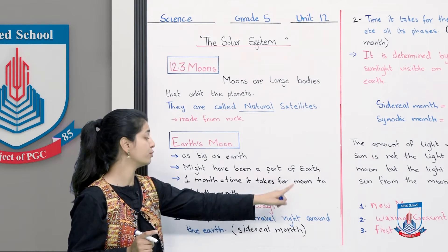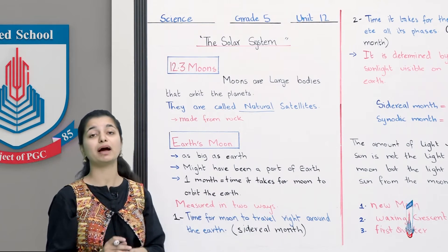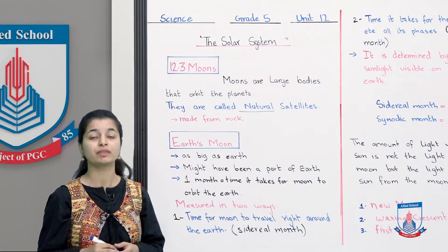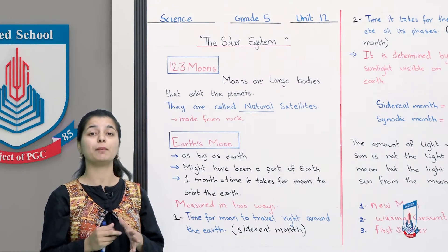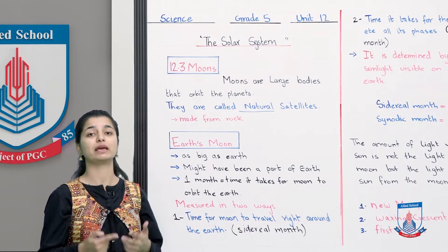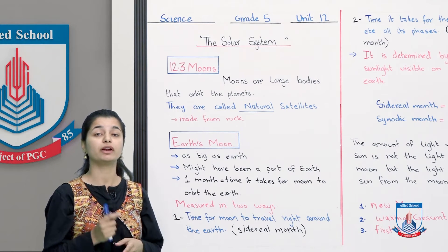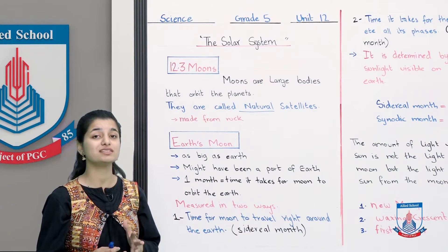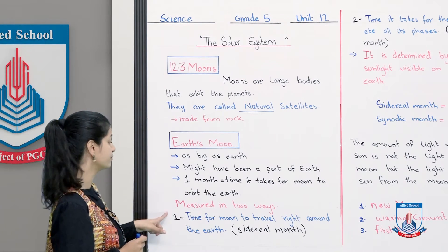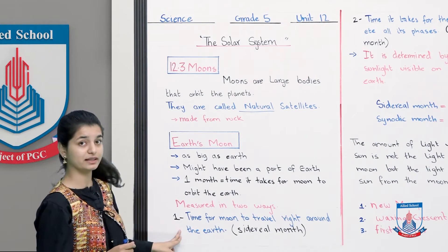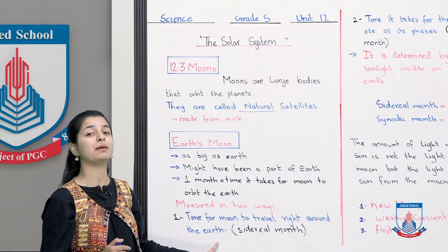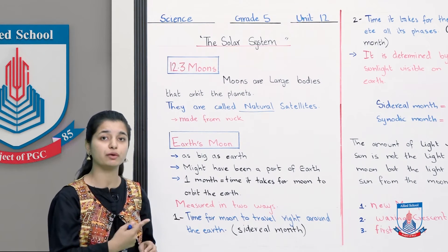One month is equal to the time it takes for the moon to orbit the earth. Ab humaara jo moon ka orbit hai, usse hum hisaab lagate hai ke humaare ek mahine ki kya length hogi. Isse importance yeh milti hai ke jo humaare months divided in twelve different months hain, woh hum kiski basis pe karte hai — moon ki movement ke, ki kitni dher laga raha hai moon earth ke girth ghoomne mein. Ab yeh jo month ka time ki measurement hoti hai, yeh hum do tariqon se karte hai, measured in two ways. Pehla tariqa yeh ki hum dekhte hai time for moon to travel right around the earth.